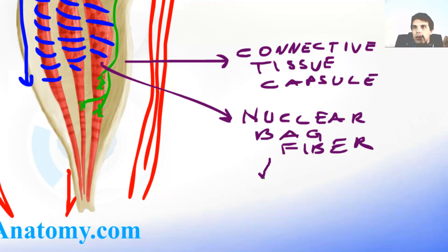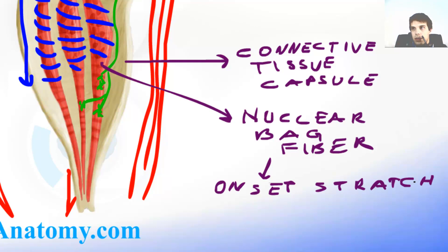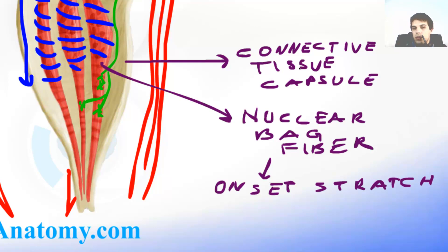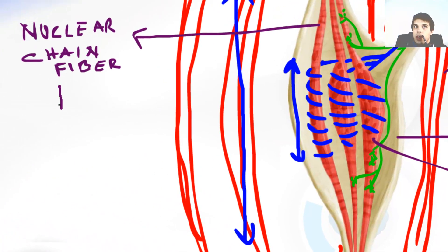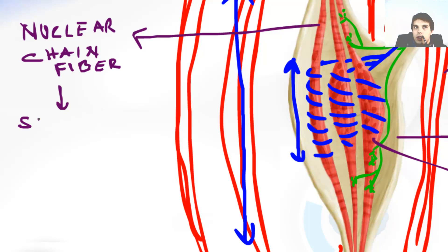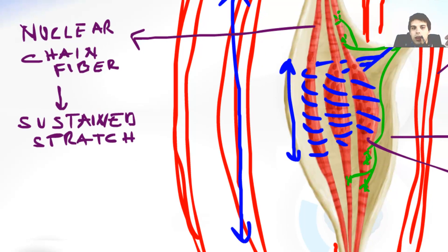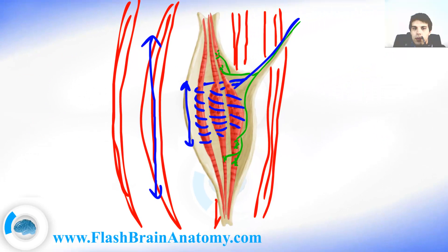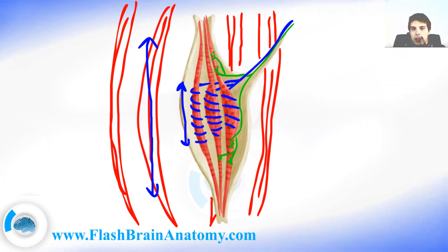Nuclear bag fibers can sense the onset stretch, while the nuclear chain fibers can sense the sustained stretch. But both can sense the rapid stretch, which is far more important.